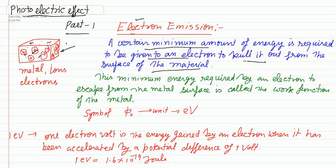These electrons inside the metal are responsible for the conductivity of any material. It is very difficult for these electrons to escape from the surface of a material because of the attractive Coulomb force between the ions and electrons. In this metal, the ions and electrons create a positive attractive force.